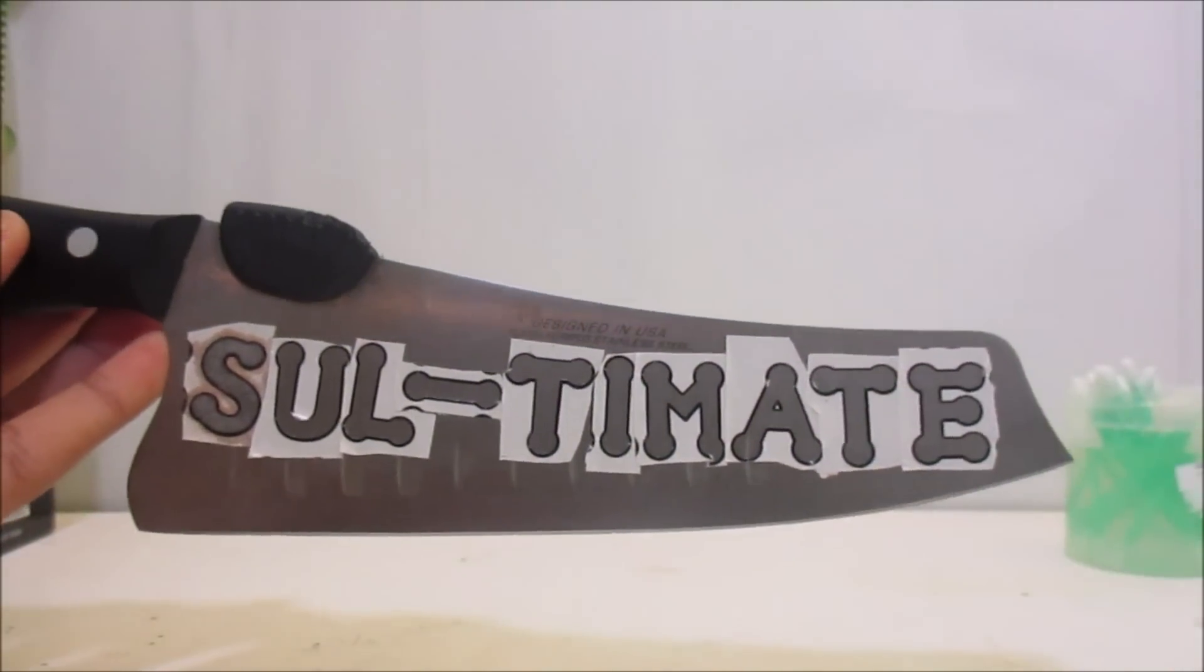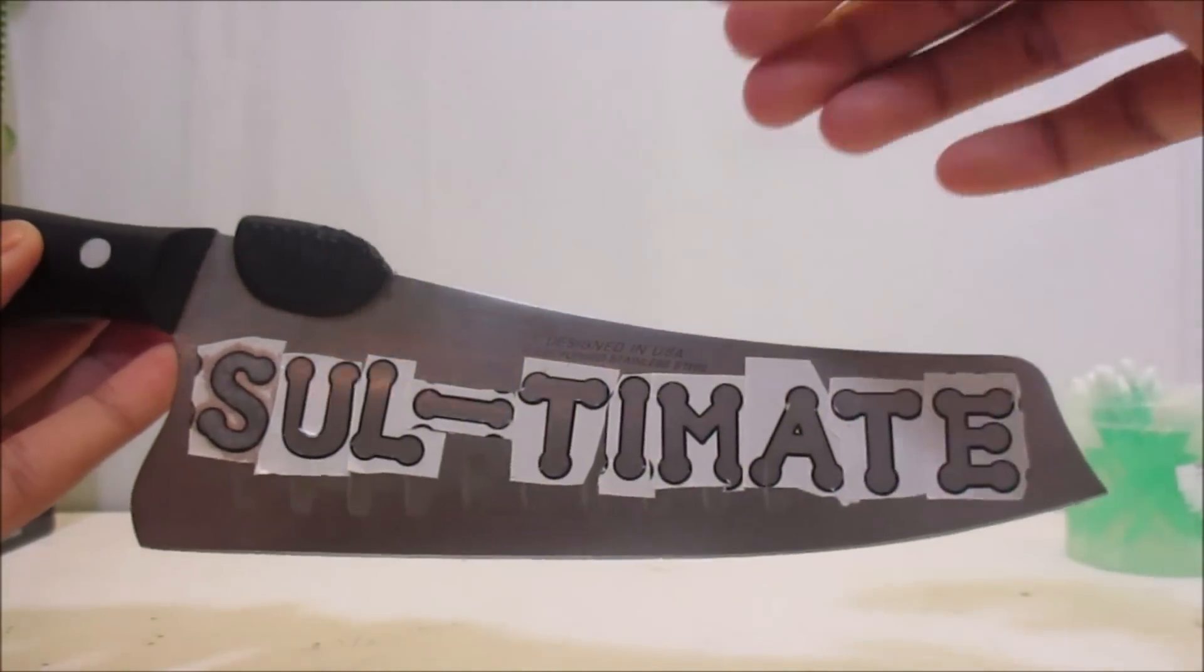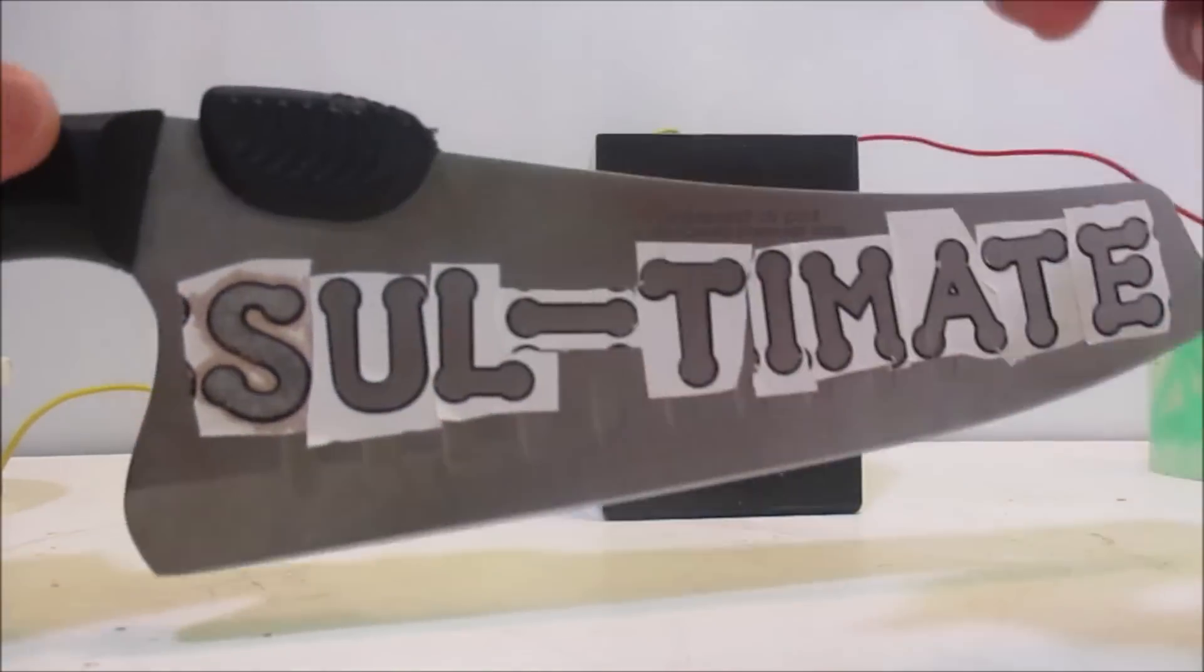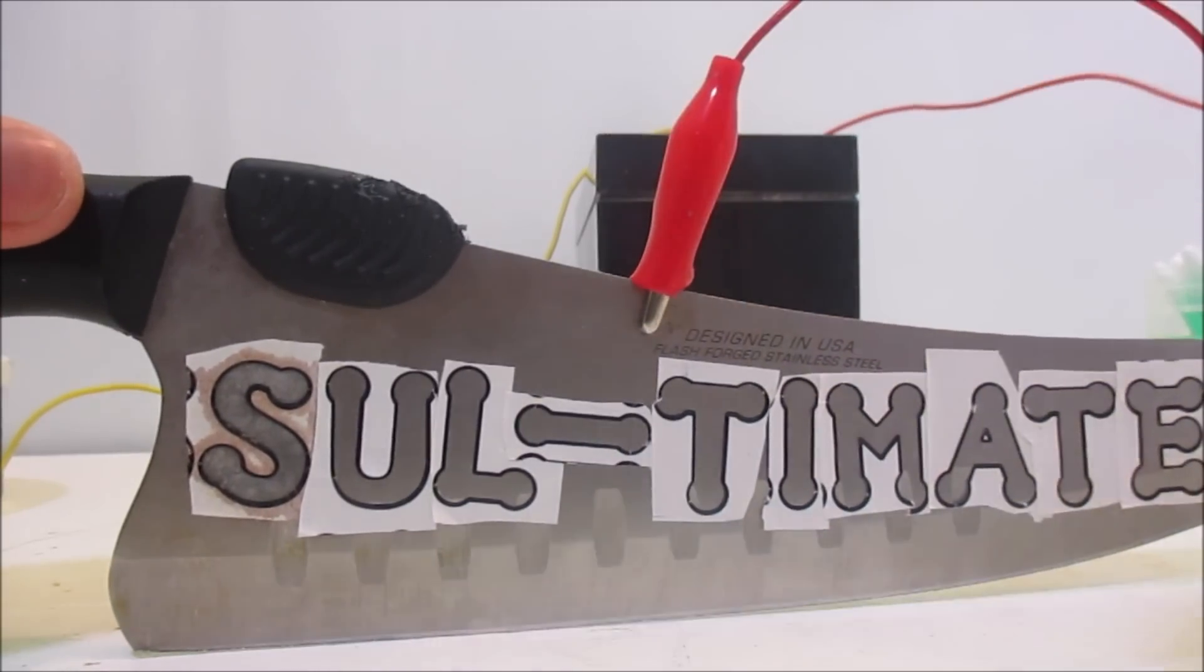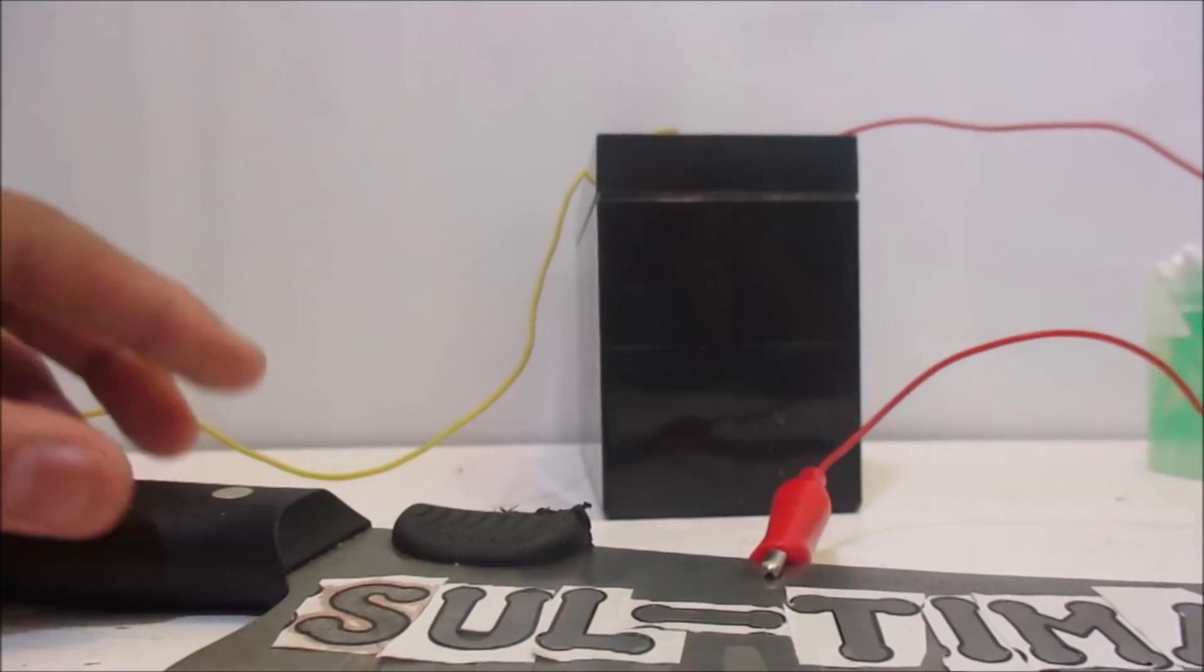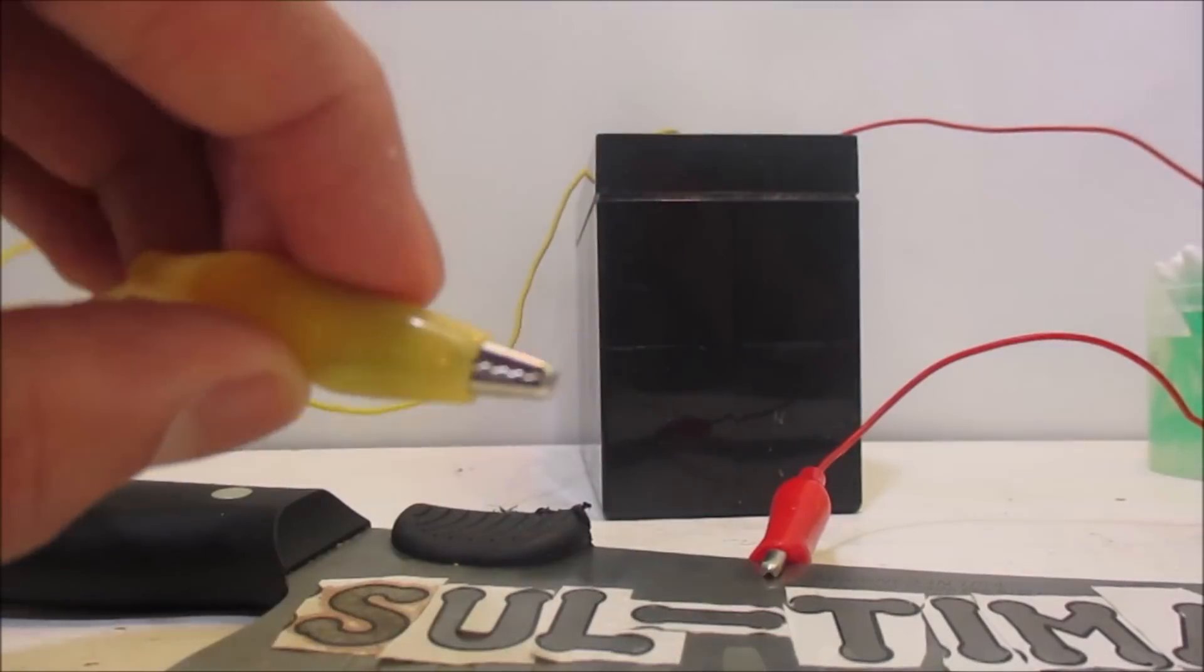After placing every single letter on the bare metal, you are going to want to take your alligator clips, and after placing each of them on separate charges, you are going to want to take the positive charge and clip it onto the bare metal itself.